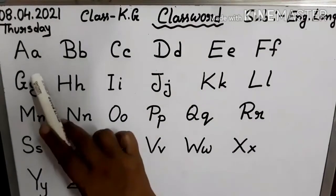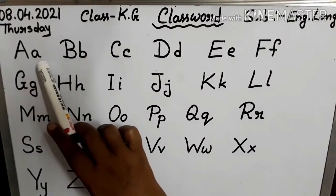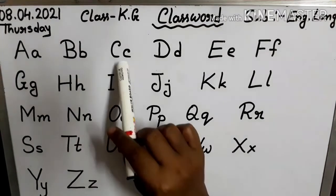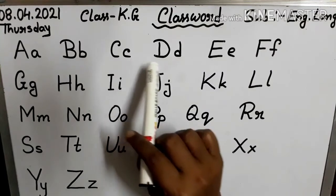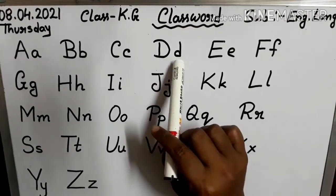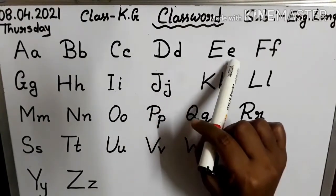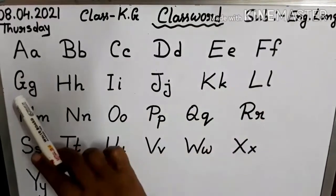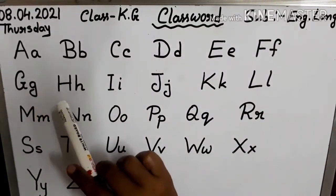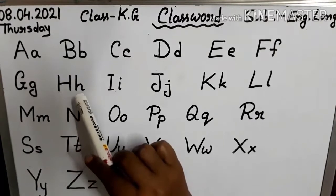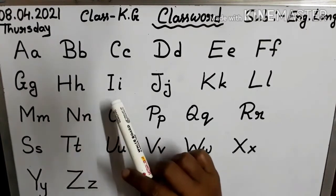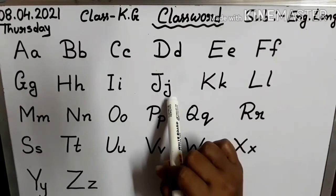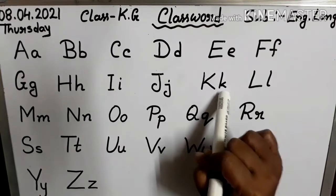Everyone follow me. I write here. See: capital A, small a. Capital B, small b. Capital C, small c. Capital D, small d. Capital E, small e. Capital F, small f. Capital G, small g. Capital H, small h. Capital I, small i. Capital J, small j. Capital K, small k.